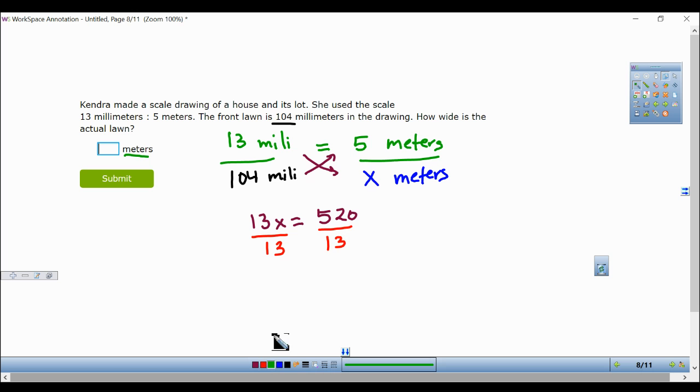13 on both sides, so whatever you do to one side, you have to do to the other. 13 divided by 13 is 1, so that leaves me with x by itself, which is what I want. And 520 divided by 13 is going to give me 40. So 40 meters. How wide is the actual lawn? 40 meters.